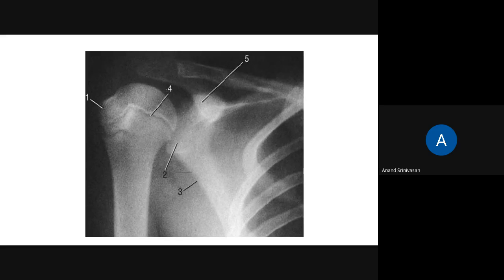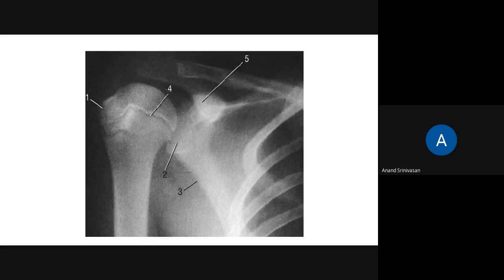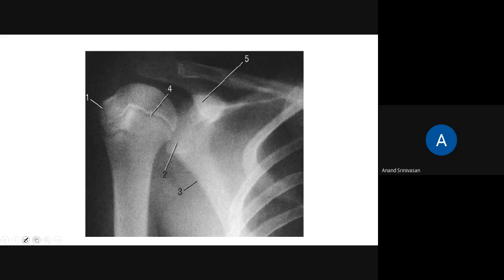It's an X-ray of a shoulder - shoulder joint, shoulder girdle - in AP view, anterior-posterior view of the shoulder. First you are seeing the soft tissues, so you will be checking along the muscles if there is any abnormality. There are no abnormalities, and then mainly this is with regard to the bones. You can also see the ribs.